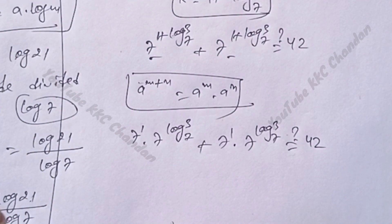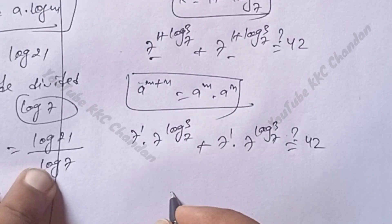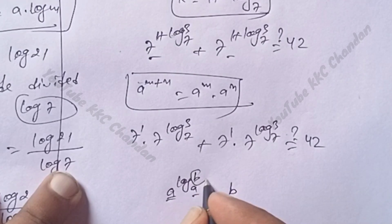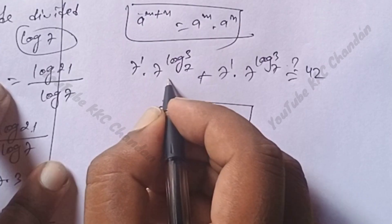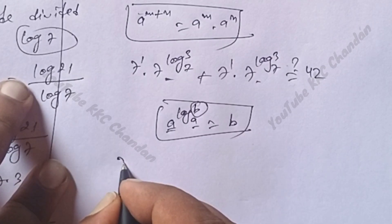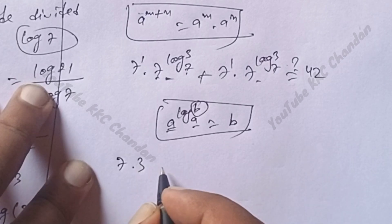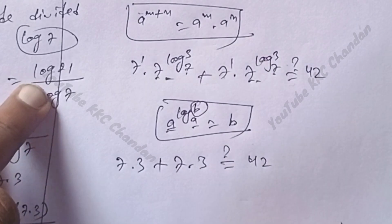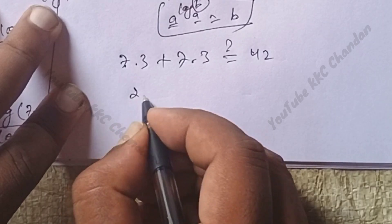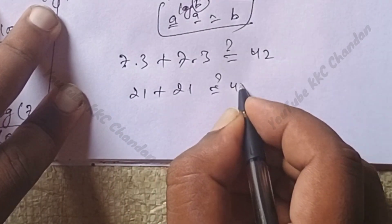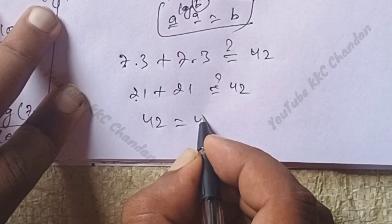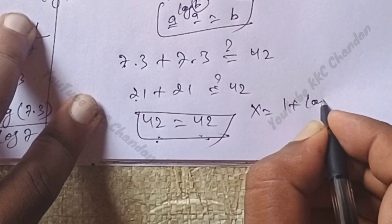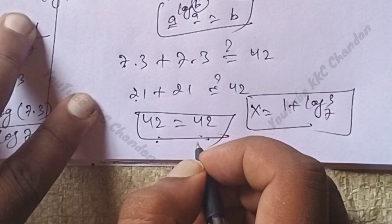We know that a power (log base a of b) equals b. Since the base is 7 and we have log base 7 of 3, the result is simply 3. So we get 7 into 3 plus 7 into 3, which is 21 plus 21 equals 42. LHS equals RHS, confirming that x equals 1 plus log base 7 of 3 is correct. Thank you for watching.